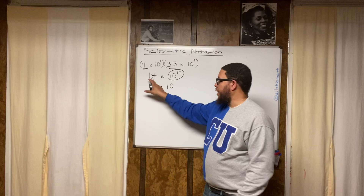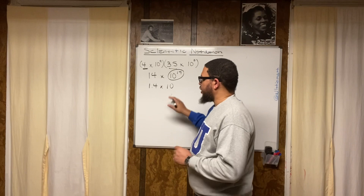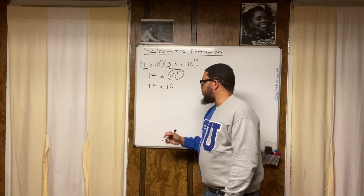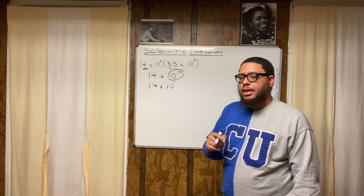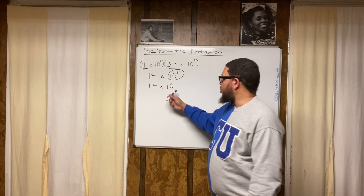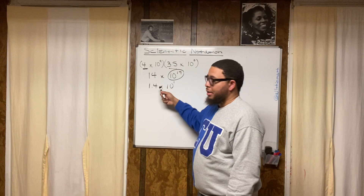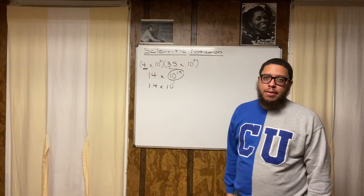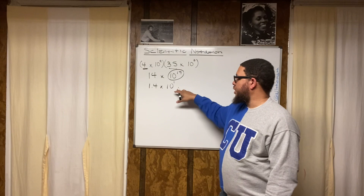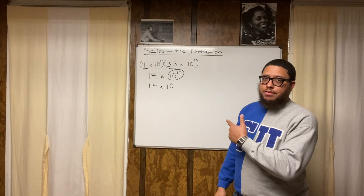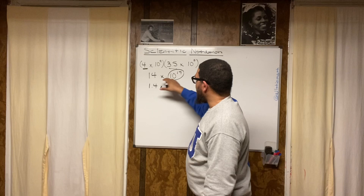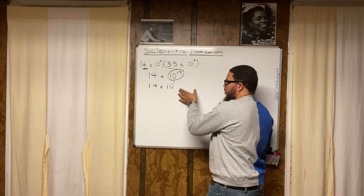So 14 becomes 1.4 times 10 to the first power, because the exponent represents how many spaces you'd move the decimal point to get back to the original number. Moving one space to the right gets us back to 14, so the exponent is positive 1. Now I bring the 10 to the 17th back into the mix — since the 14 was being multiplied by 10 to the 17th, and now 14 has become 1.4 times 10 to the first, this gets multiplied by 10 to the 17th.